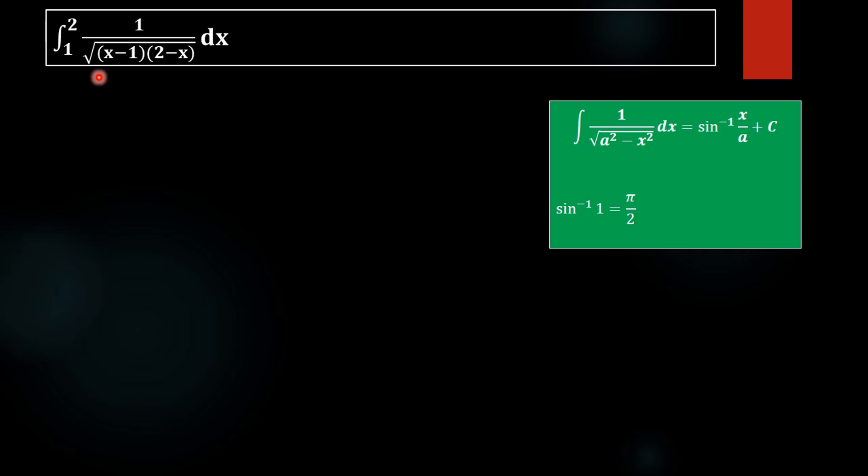This is a quite easy problem. We have to make some rearrangements in the denominator to make this function into an integrable format. After that we have to apply the limits of integration. First we rearrange the denominator into integrable form, next we find the value of the integral, and third we apply the limit. This is our procedure.